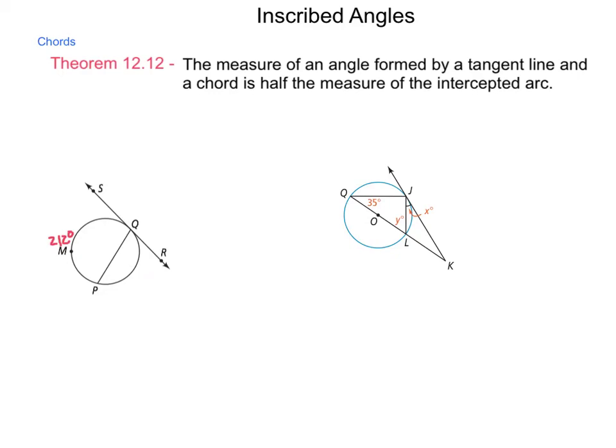So, just as with an inscribed angle being half of the intercepted arc, the tangent and chord combination do the same thing. So, in the diagram on the left, we have line SR, which is tangent to the circle at point Q, and arc PMQ is 212 degrees.